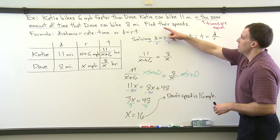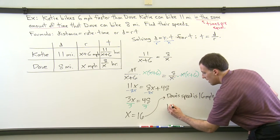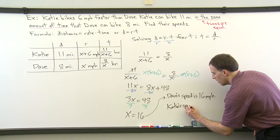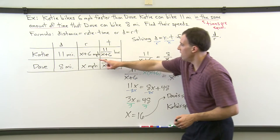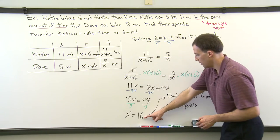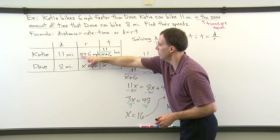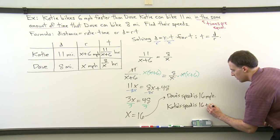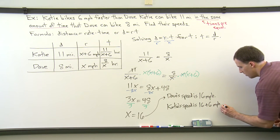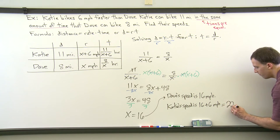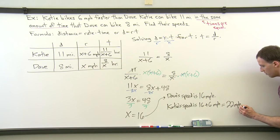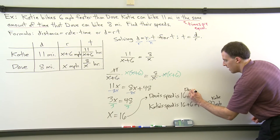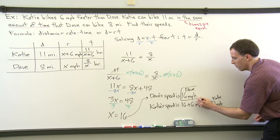And then to answer the question, find their speeds, we have half of the answer. The other person, Katie here, her speed is X plus 6. So if we substitute 16 for X, 16 plus 6 miles per hour, which is 22 miles per hour. So 22 miles per hour, that's for Katie, and 16 miles per hour for Dave. And we've solved for both of their speeds.